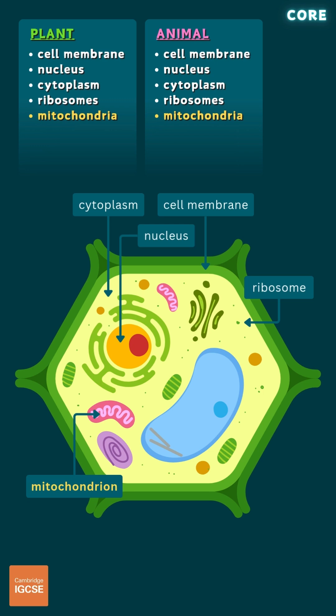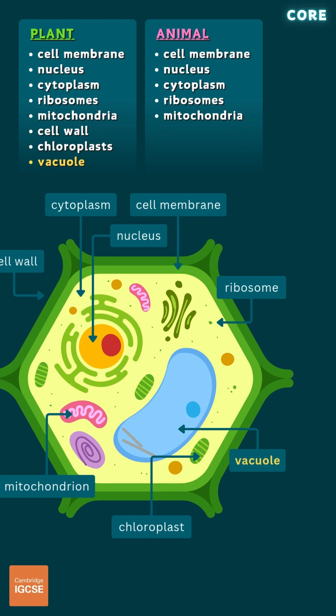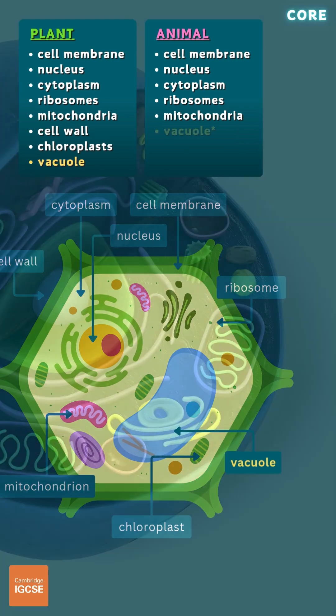The structures that feature in plant cells but not animal cells include a cell wall that surrounds the cell membrane providing structural support and protection, chloroplasts which are the sites of photosynthesis, and a large central vacuole which stores water and nutrients and helps to regulate cell pressure.